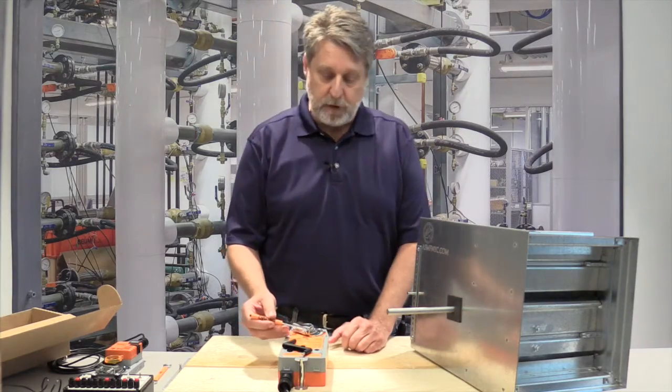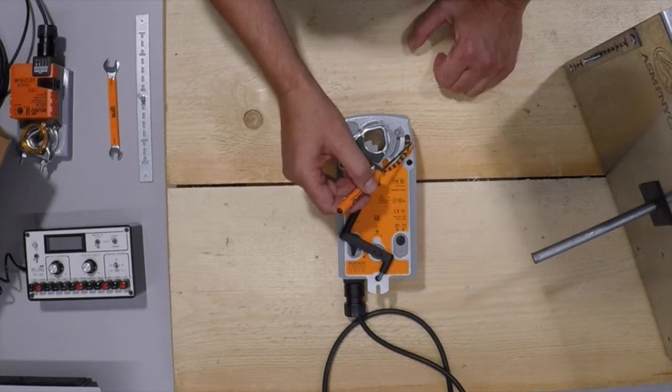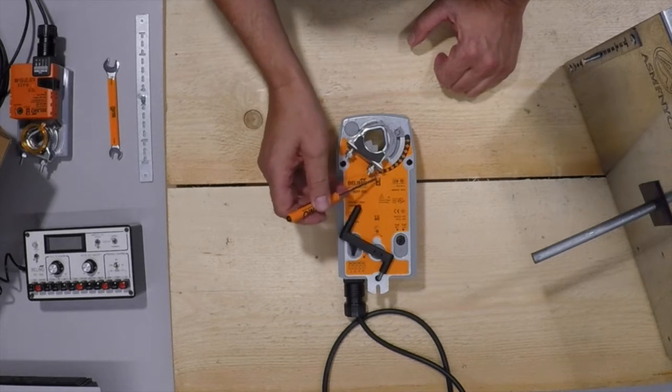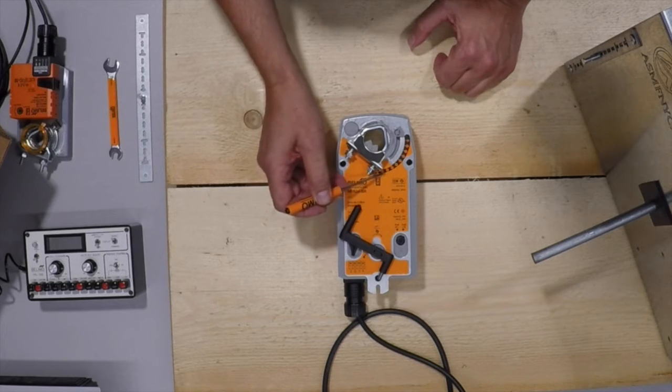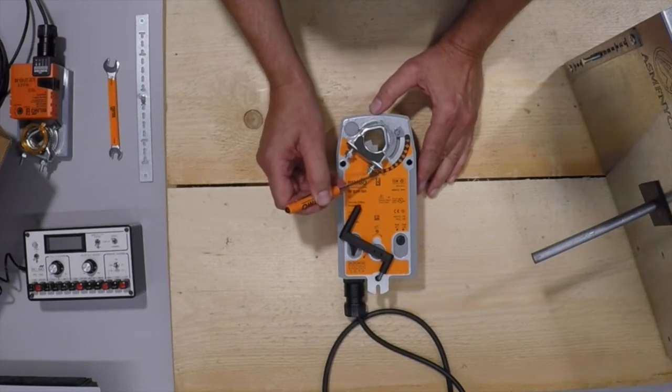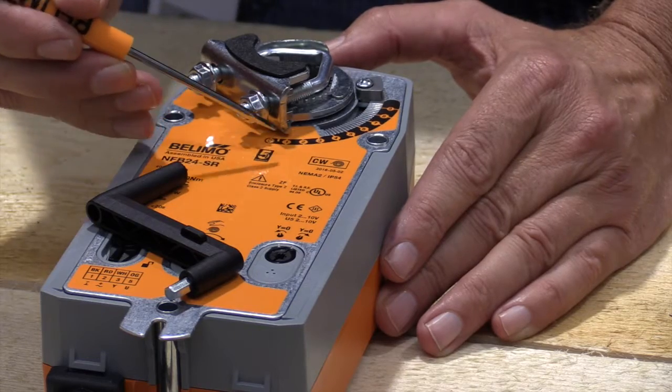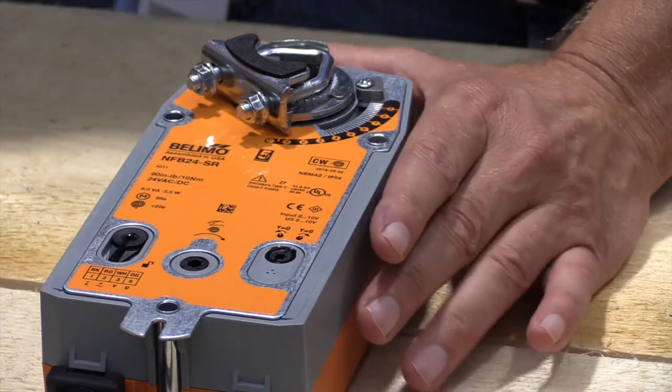If you look on the face of the actuator, there's a black scale with numbers from zero to ninety. Each separation is 10 degrees. If you notice, there's a little tick mark between the zero and the one, and that's five degrees. It comes from the factory preset.